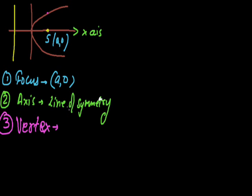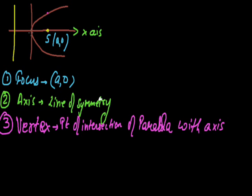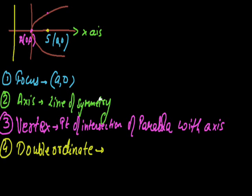Third comes the vertex — vertex is the point of intersection of the parabola with the axis; here vertex is at the origin. The fourth term is double ordinate: a double ordinate is any chord perpendicular to the axis. For example, if I draw a chord perpendicular to the axis here — that is a double ordinate. Another chord perpendicular to the axis elsewhere — that is also a double ordinate. So these chords are our double ordinates.